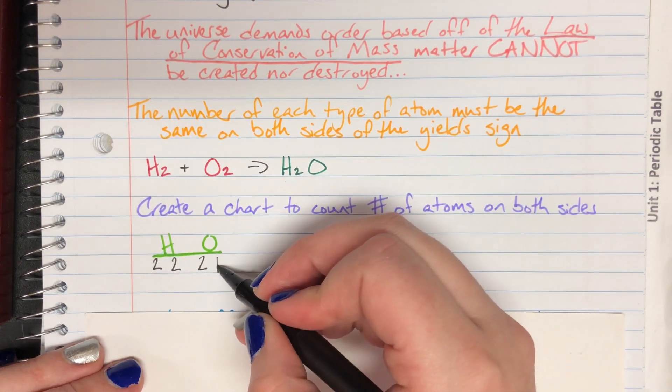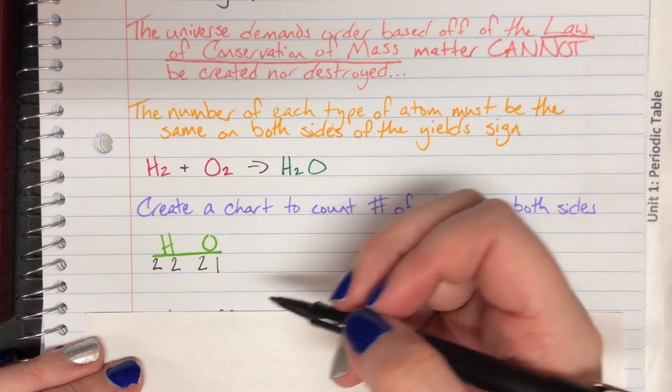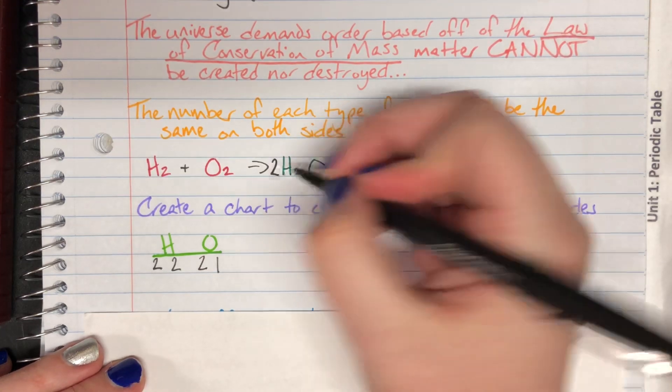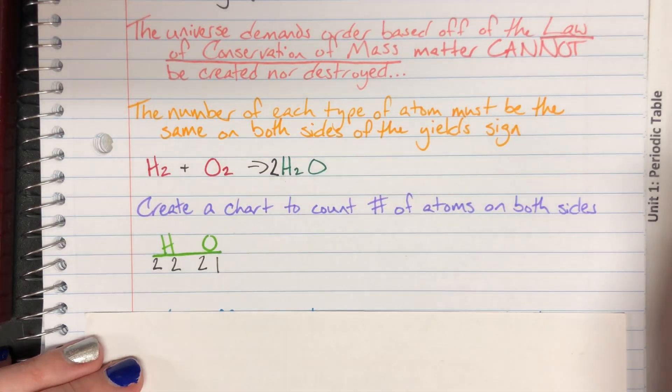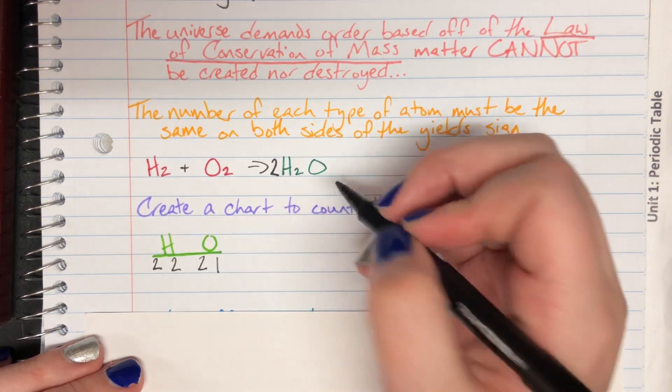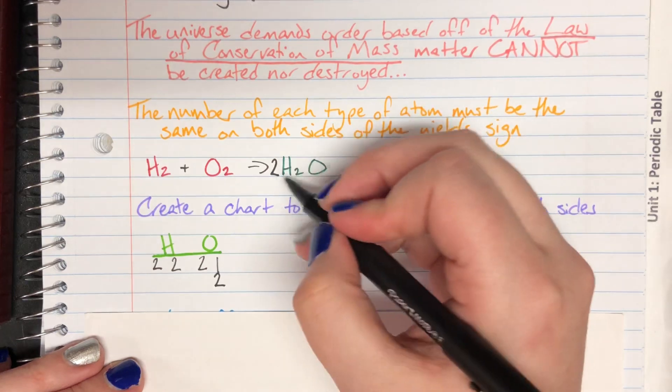I have one on the right hand side and I want two. So one times what will give me two? Two. I'm going to put a coefficient of two in front of H2O and that will multiply out.